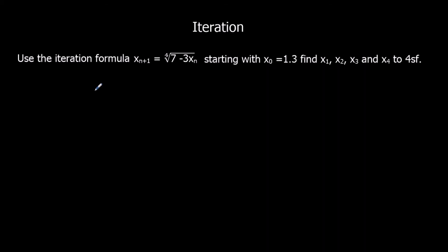So x1 first. So x1 is going to be the fourth root of 7 minus 3 times 1.3. So we type that into the calculator. And we get out to 4 significant figures, 1.327.